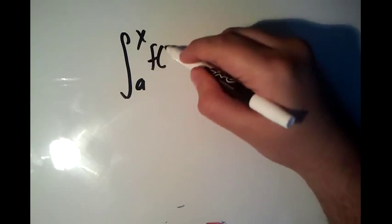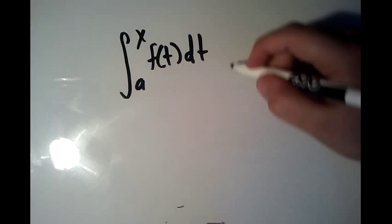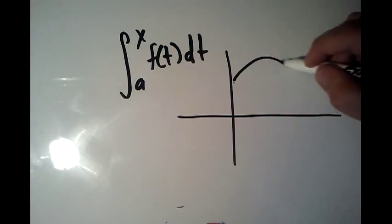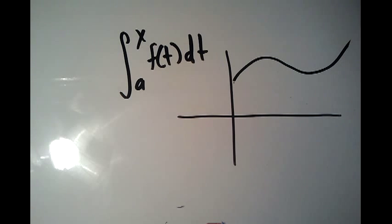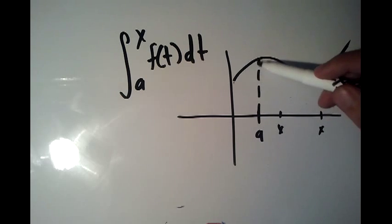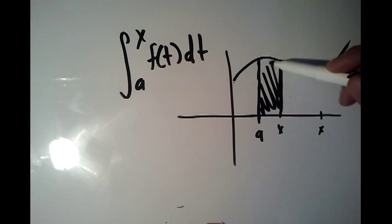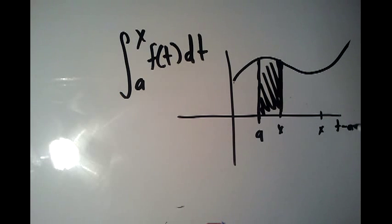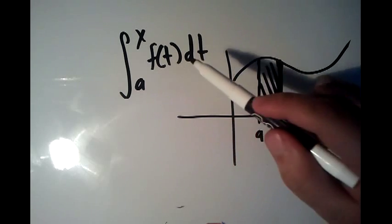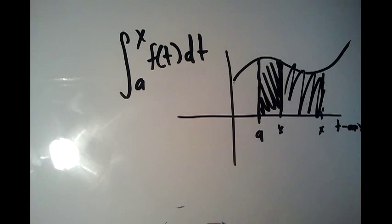Let's get a visualization before we proceed with the proof. What does this mean — the integral from a to x of f of t dt? Well, if you have a graph and you draw the graph of f of t, then from a, which is just some fixed number, going all the way to x, where x is a variable that's changing, this integral gives the area from a to x along the t-axis. And it's saying that the derivative of this function — the rate of change of the area — is given by f of x.